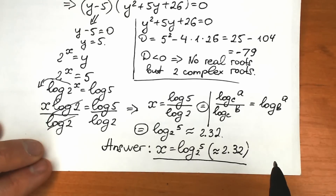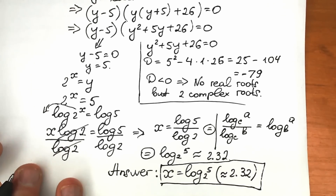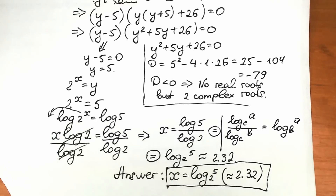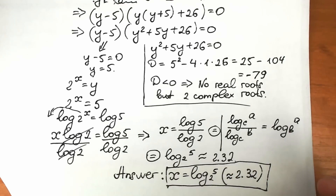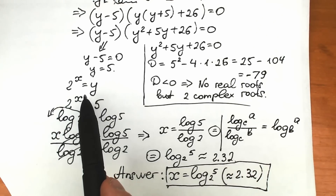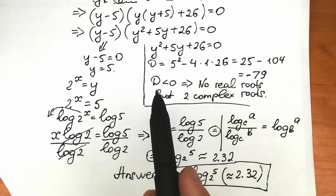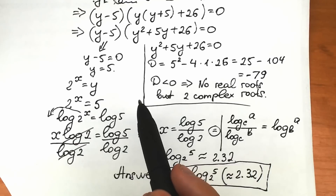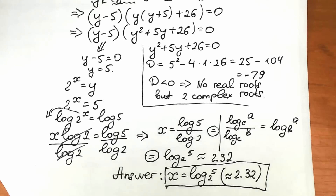This is our solution: x equal to log base 2 of 5, or approximately 2.32. I hope you understand this explanation and learned something new — don't feel bad if you got this wrong. If you need help, I have a lot of videos on my YouTube channel. Write your questions in the comment section, and also write your solution for the complex roots part — it's really interesting and quite hard, since 2 to the x equals a complex number, which you can handle using natural log or Euler's formula. Thank you for your time, see you in the next video, have a great day and take care.